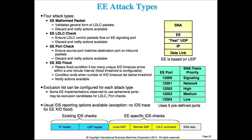In V1R13, attack types specific to Enterprise Extender (EE) were added. EE is based on UDP and uses five predefined ports. The other IDS checking focuses on the IP and UDP headers. The EE attack types add additional checking of the EE headers embedded within the TCP/IP packet. There are several such checks specific to EE.